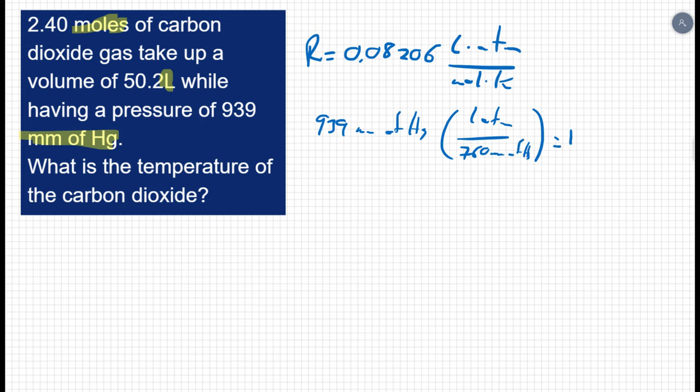That is 1.24 atmospheres. So let's use the ideal gas law. PV equals nRT. Solving for T, I'm going to take both sides and divide them by n and R. So T is going to equal PV over nR.